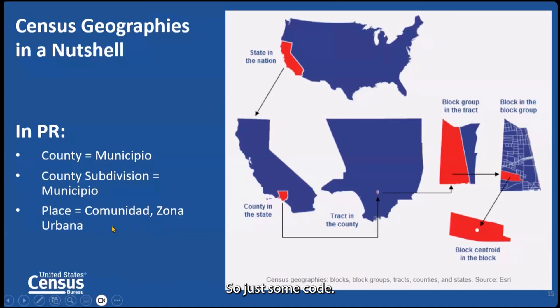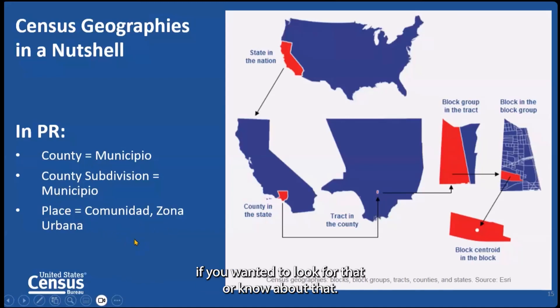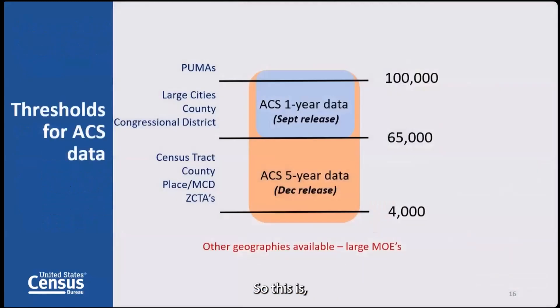Here's a schematic: every block is numbered, blocks nest within block groups, block groups nest within a tract, and tracts nest within the county — which is municipio in Puerto Rico. Municipios nest within Puerto Rico as the state equivalent, and that nests within the US. In our system, county equals municipio, county subdivision also equals municipio, and 'place' would be your comunidad or zona urbana.